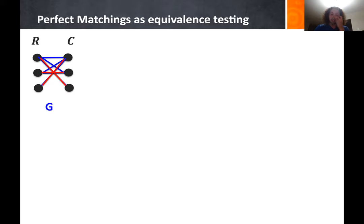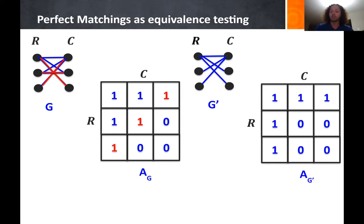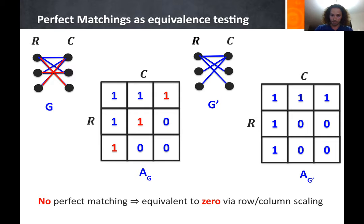Many of us don't see perfect matching in bipartite graphs as an isomorphism or equivalence problem, but it essentially is: deciding whether a graph has a perfect matching is equivalent to asking whether the adjacency matrix A is equivalent to the zero matrix under the matrix scaling problem, i.e., via row and column scaling.